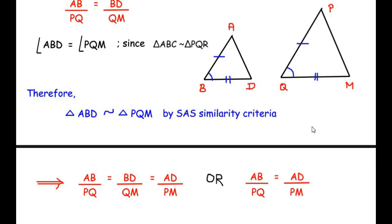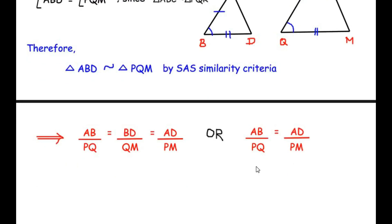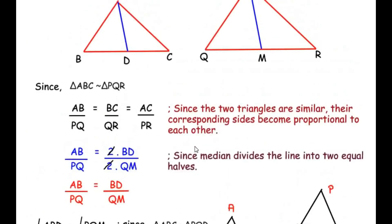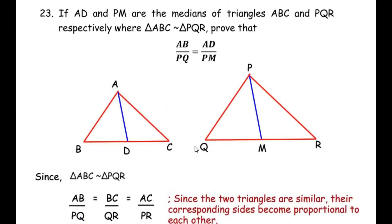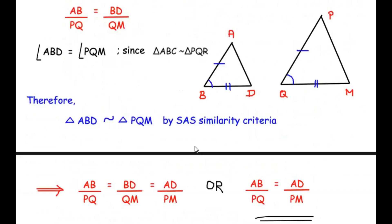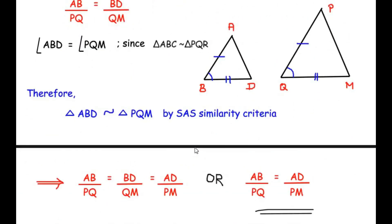Using the similarity criteria, we have proved that the two triangles are similar, hence their corresponding sides are proportional. I hope you have understood all the steps. If you know any other way of solving this example, do comment below. If you are liking my videos, please like, share and subscribe to my channel. Thank you for watching.